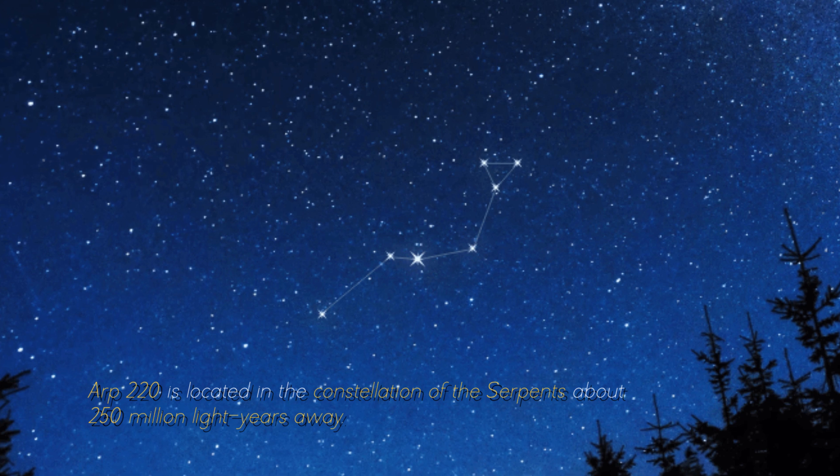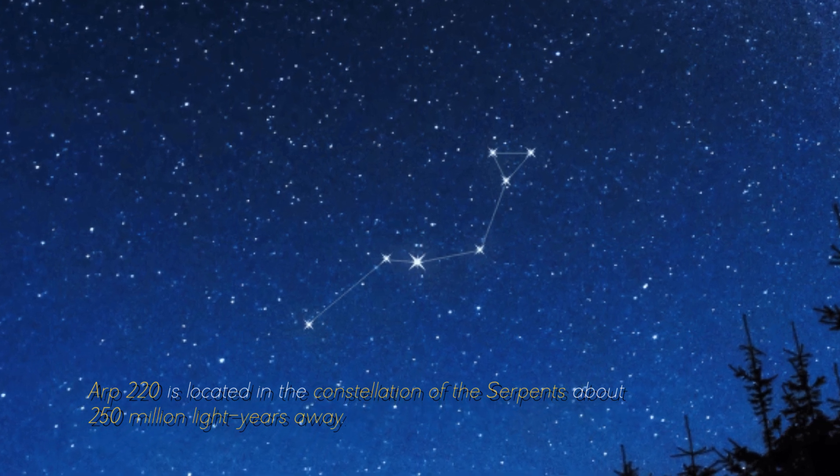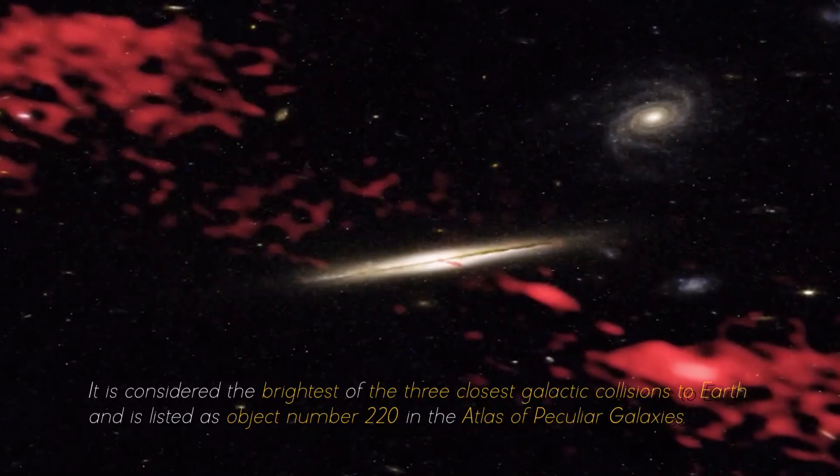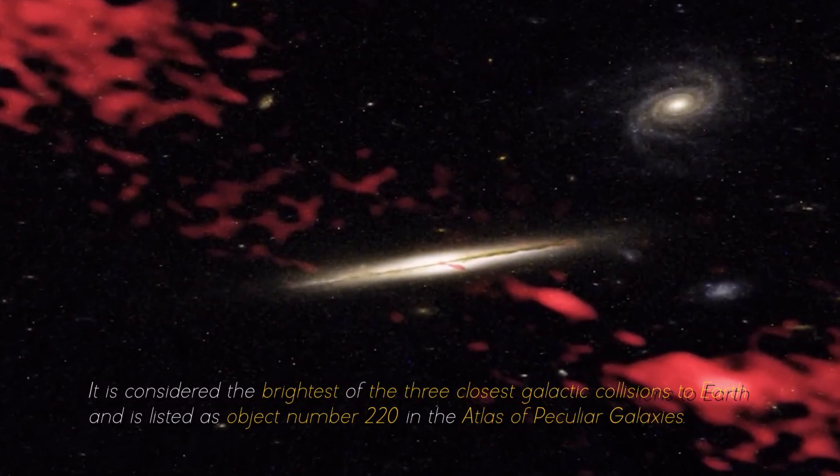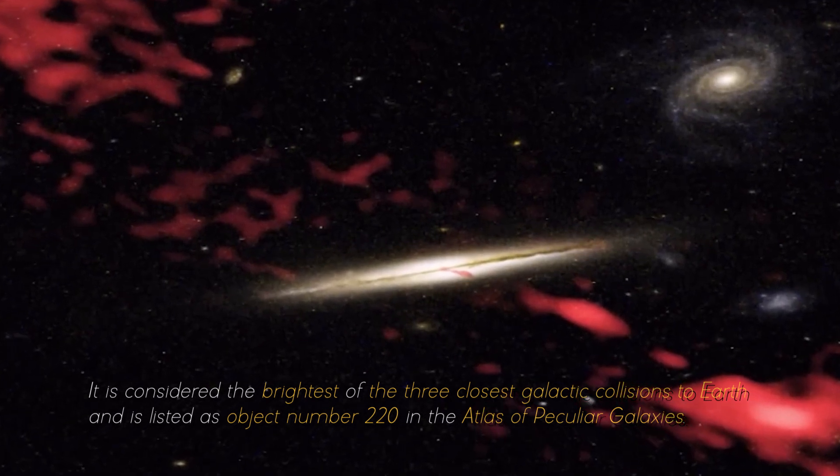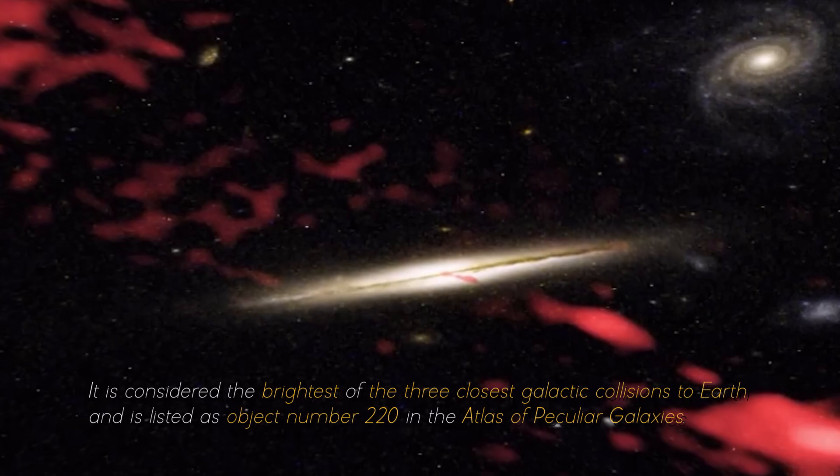ARP 220 is located in the constellation of the Serpent, about 250 million light years away. It is considered the brightest of the three closest galactic collisions to Earth, and is listed as object number 220 in the Atlas of Peculiar Galaxies.